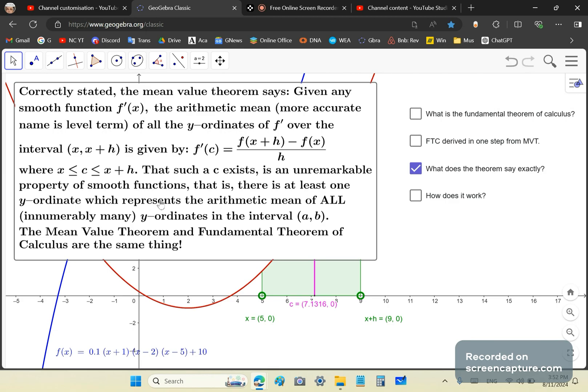And you can tell that they've never understood because they've always written it, or mostly written it, with a capital F for the primitive and a little f for the derivative. So the arithmetic mean of all the y ordinates of f of the interval is given by f prime of c.